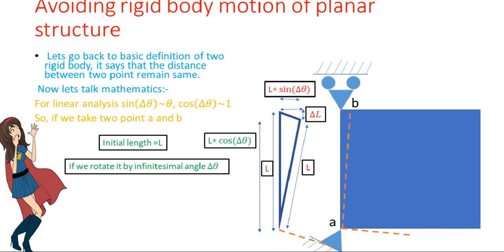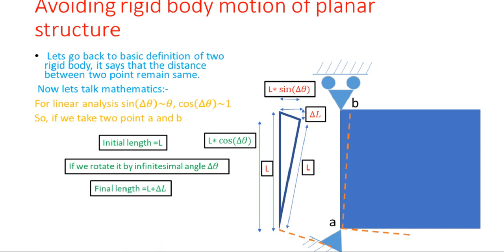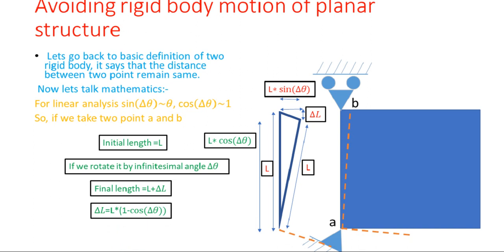Even after computing analytically or performing simulation, it will not give good results because of the linear approximation. Initially the length was L, and after deflecting by angle delta-theta, the length changes to L·cos(theta). The final length L + delta-L means delta-L equals the initial length minus the final length. Applying the approximation, cosine theta reduces to one, and one minus one gives zero, so delta-L equals zero. This confirms why the rotation is not constrained under linear analysis assumptions.